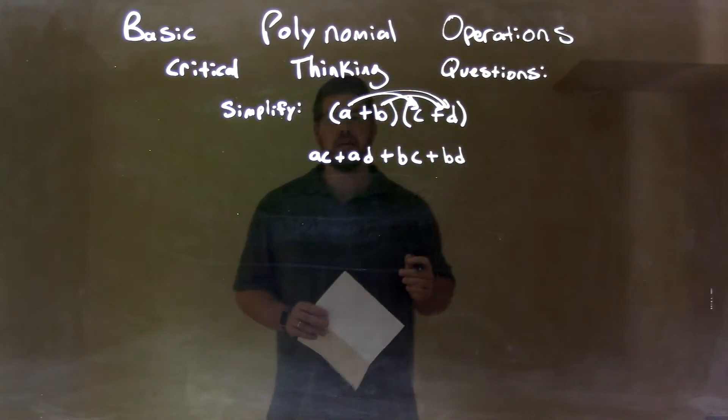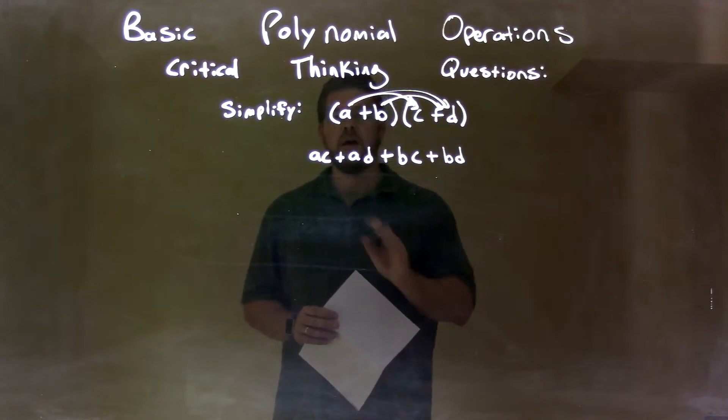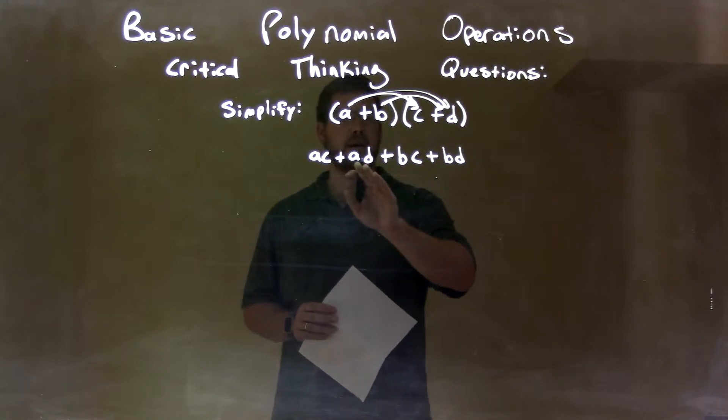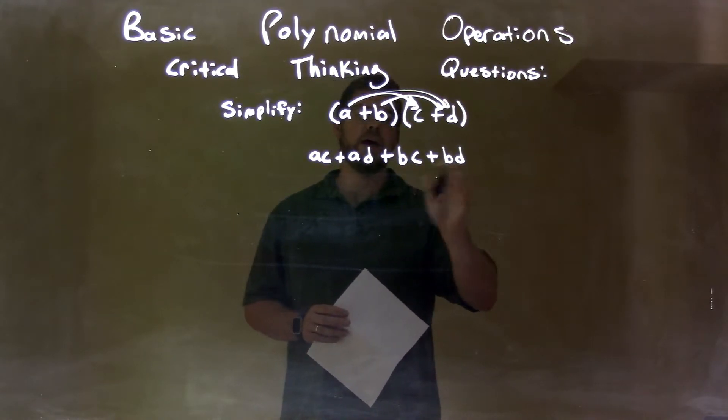And that's actually it. There's no like terms that we can combine, right? There are combinations a times c, a times d, b times c, and b times d.